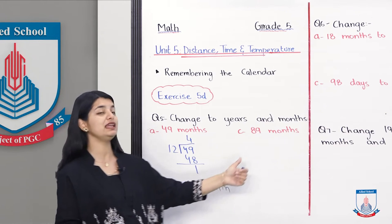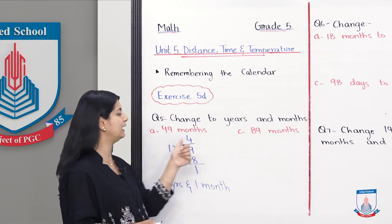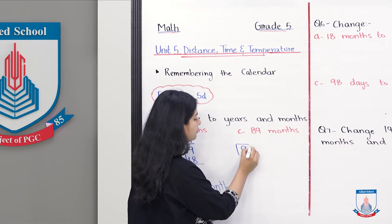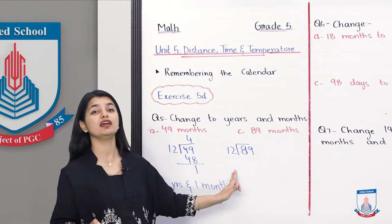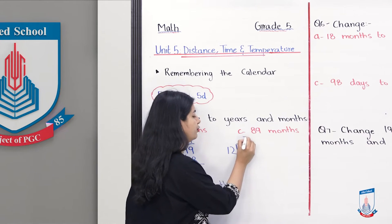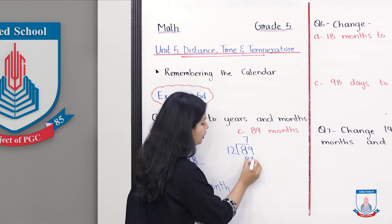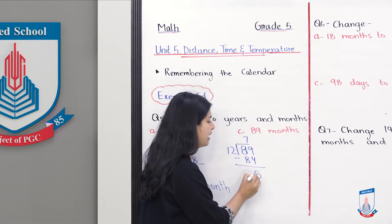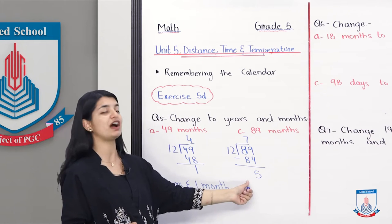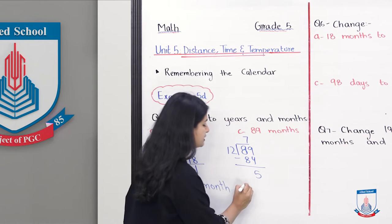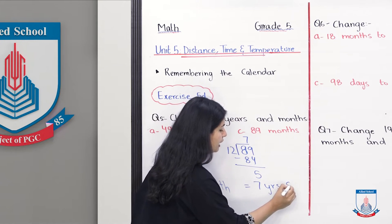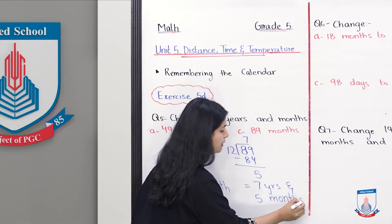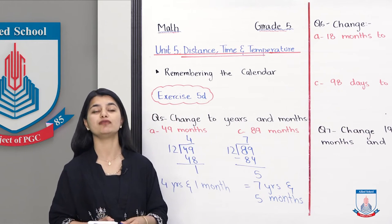Now if we see Part C: 89 months — we have to divide by 12. We know that 12 times 7 is 84. So 89 minus 84 is 5, meaning the remainder is 5. The answer is 7 years and 5 months. In this way, you can solve the rest of the parts by simply dividing where necessary.